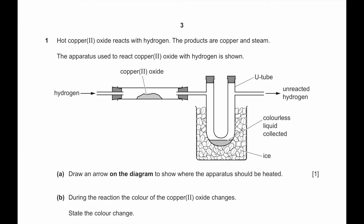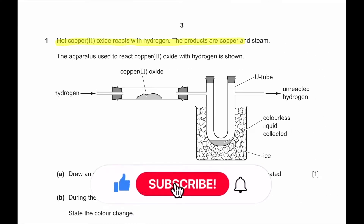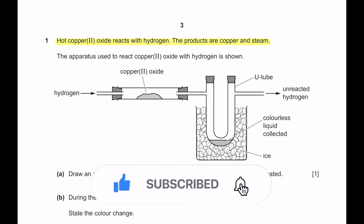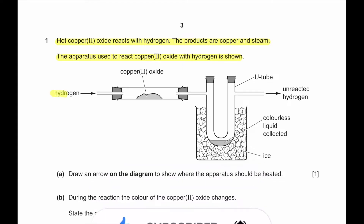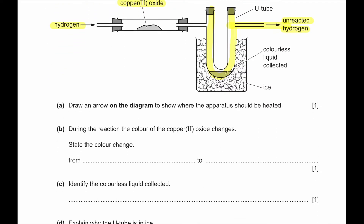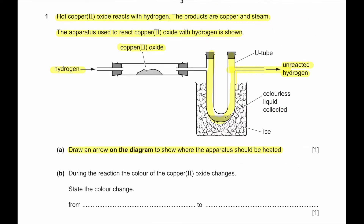Question number 1. Hot copper oxide reacts with hydrogen. The apparatus used to react copper oxide with hydrogen is shown — hydrogen being passed through copper oxide, then through a U-tube where vapors pass, and unreacted hydrogen exits from the end. The apparatus should be heated at the point where we have the copper oxide, so the arrow will be just below the copper oxide.